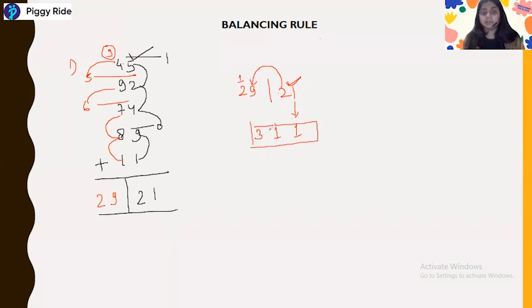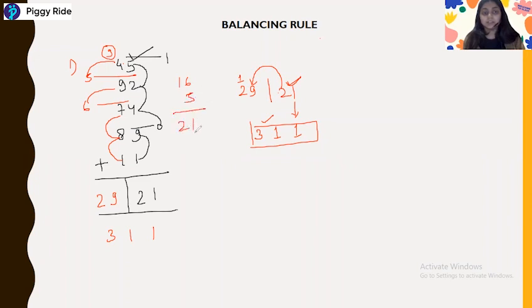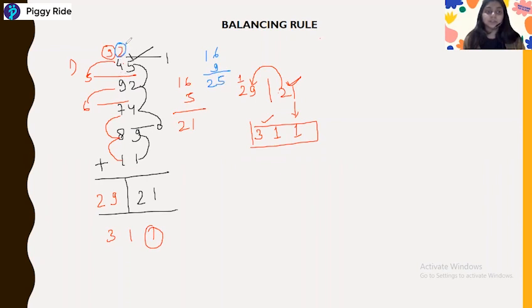So the answer is 311. Let's verify: 1, 9 — ten; drop ten, zero plus 4, four; 4 and 2, six; six and 6, twelve; twelve and 5 is seventeen — carry 1, remainder 7... tallying up gives 21 with carry 2. Then the second series sums to 29, plus the carry of 2 gives 31. So the final answer is 311, which is correct.